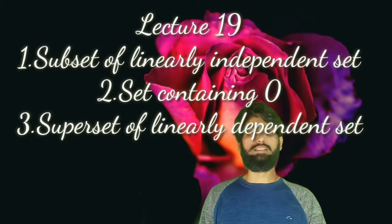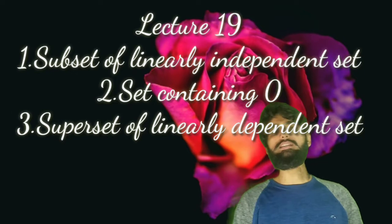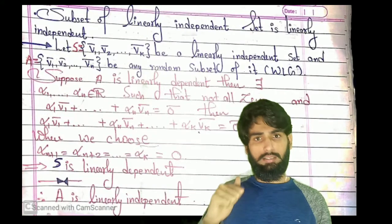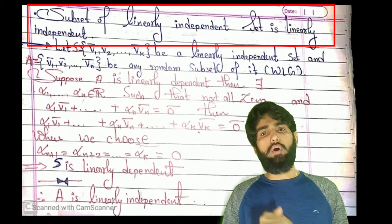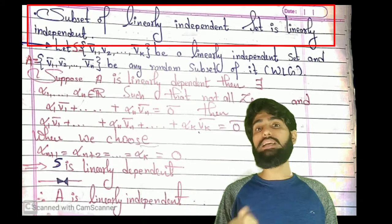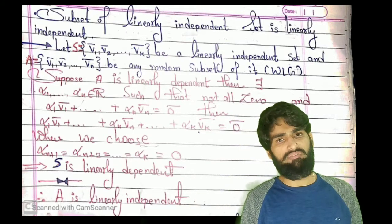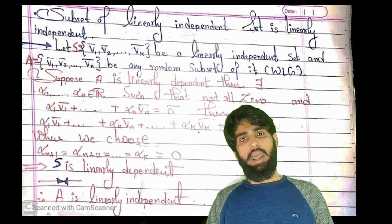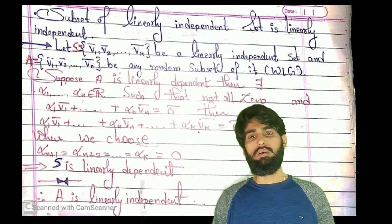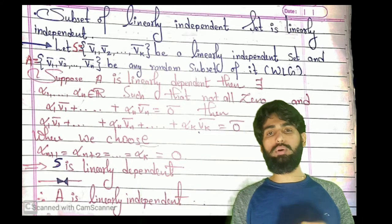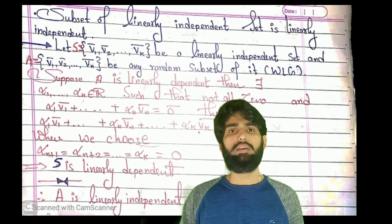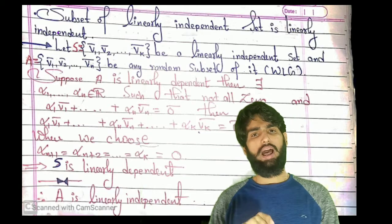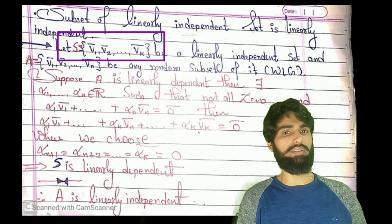Hello friends, welcome to this lecture. In this lecture we will be discussing some results related to linearly dependent and independent sets. Let's start with the first and most important one: we will prove that a subset of a linearly independent set is linearly independent. That means if you are given a linearly independent set and any random subset of it, you can write it as a linearly independent set without further proof.